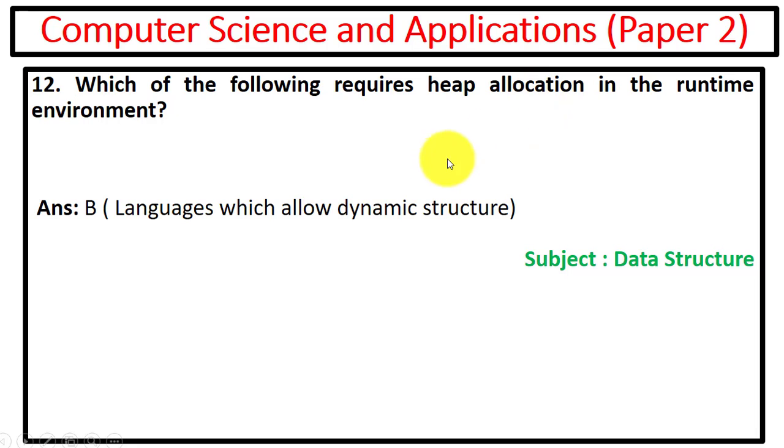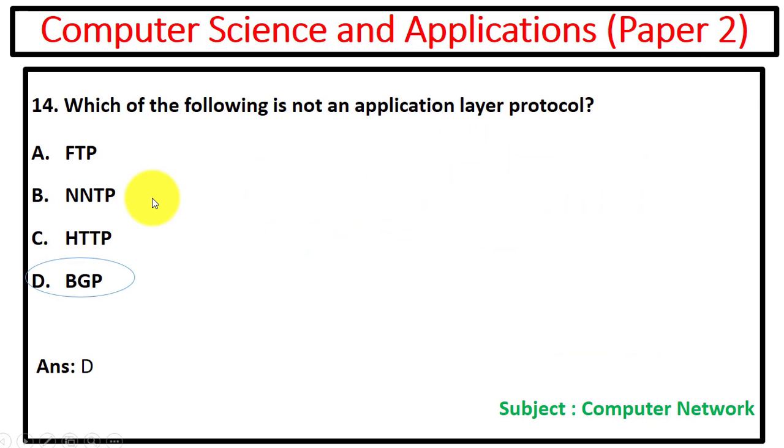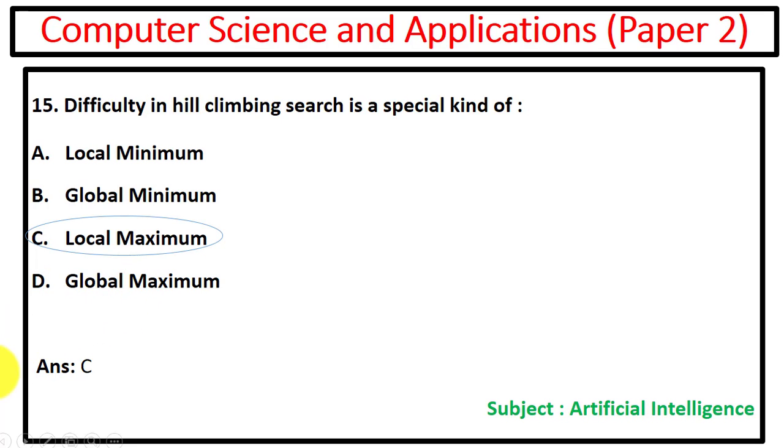We have to match the following: data link layer deals with framing, network layer deals with routing, transport layer deals with connection control, and session layer deals with token management. Next question is which of the following is not an application layer protocol, that is BGP. Next is difficulty in hill climbing search is a special kind of local maximum.